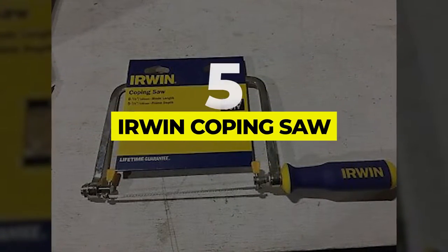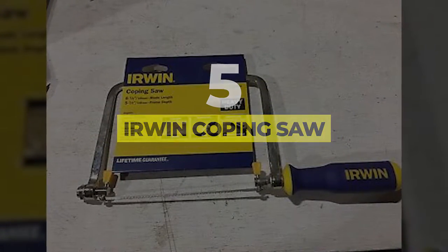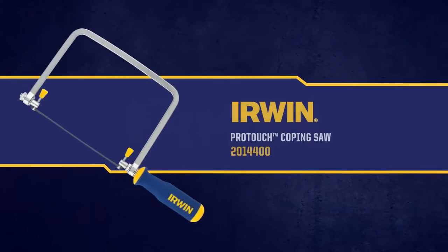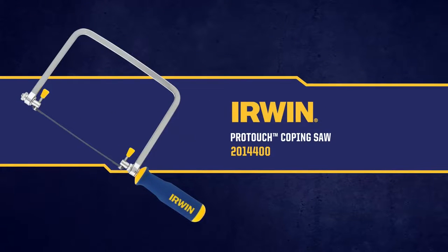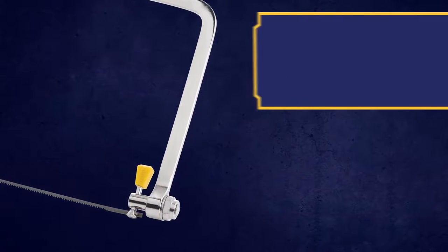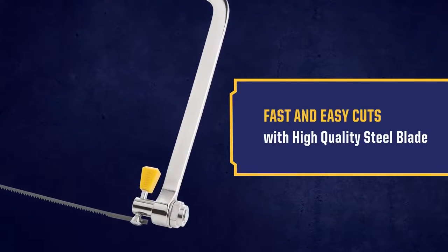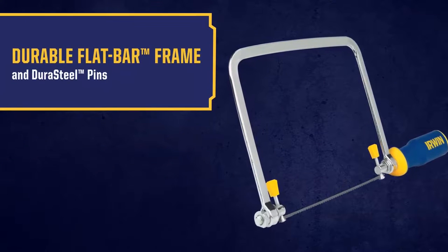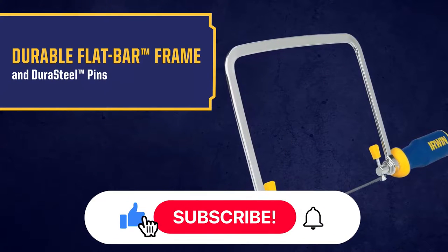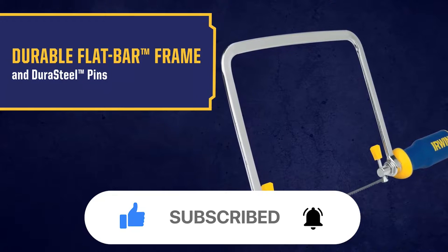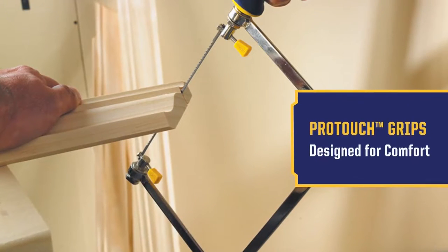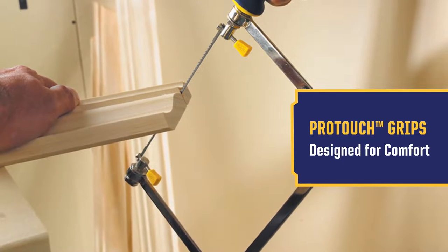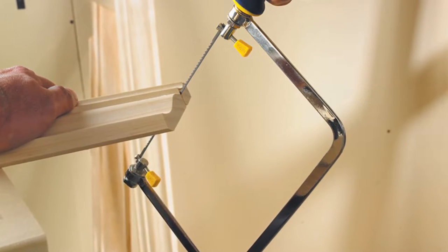Number 5: Irwin Coping Saw. The Irwin Tools ProTouch has one of the largest depths of any coping saw on the market. It also comes with a blade that has 17 teeth per inch rather than the conventional 14, allowing for faster, easier, and more precise cuts. It's also one of the most affordable options on the list, so you get all of these features for a fraction of the cost of the others. It also has an